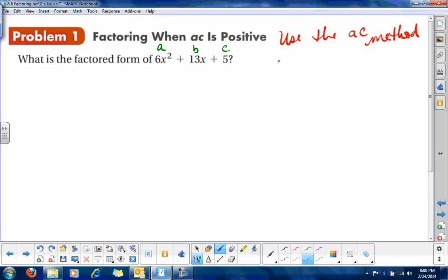Okay, so when we use the AC method, we're going to multiply A times C. So we're going to multiply 6 times 5, which is 30. Now, this is the number that we're going to get the factors of. So we want to get the factors of this number.